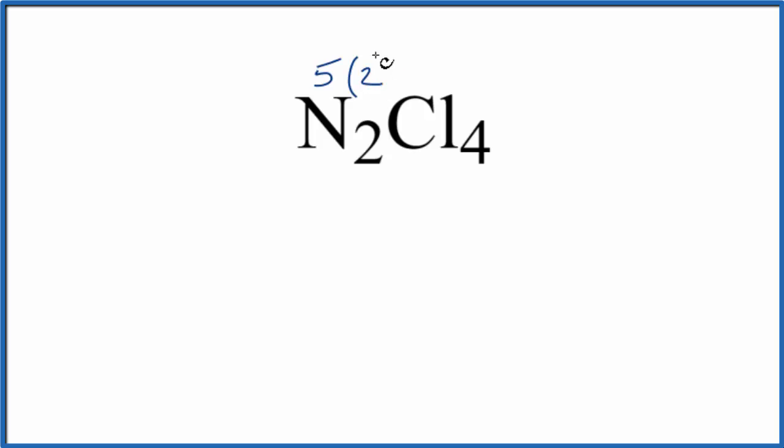We have 2 nitrogens, plus chlorine group 17, sometimes called 7A, it has 7, and we have 4 chlorines. So 10 plus 28, that gives us 38 total valence electrons for the N2Cl4 Lewis structure.